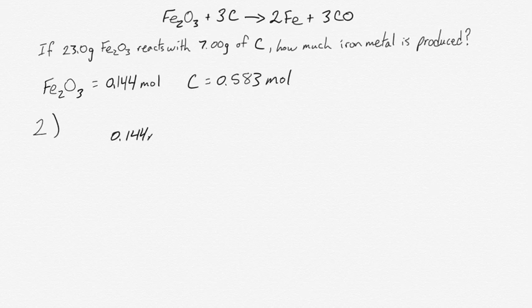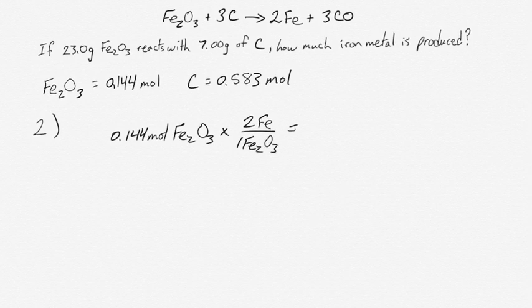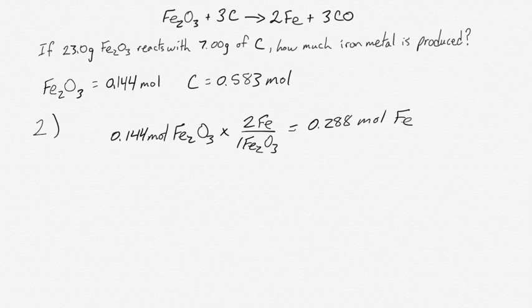So we start with 0.144 moles of hematite, Fe2O3. And we say we can make two irons for every one Fe2O3, which means we can make 0.288 moles of iron. So this is prediction number one.